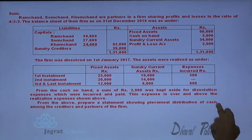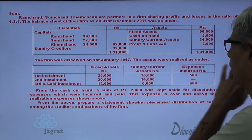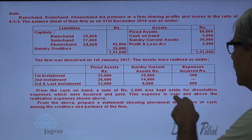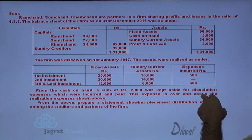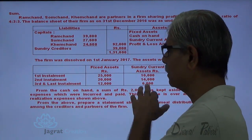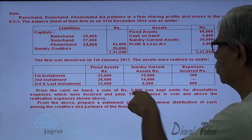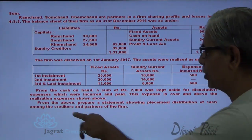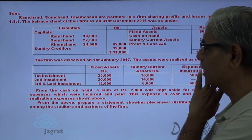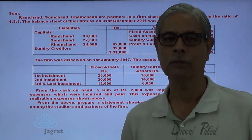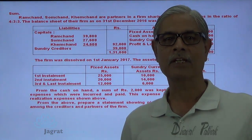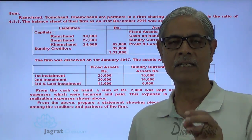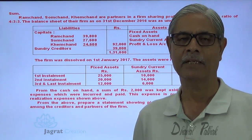These dissolution expenses of 2,000 are over and above the realization expenses shown above — these 2,000 are separate from those. We are required to prepare a statement showing the piecemeal distribution of cash amongst the creditors and partners of the firm. You are not specifically told which method to adopt, so you can use any one: maximum loss method, capital comparison method, or relative capital method.